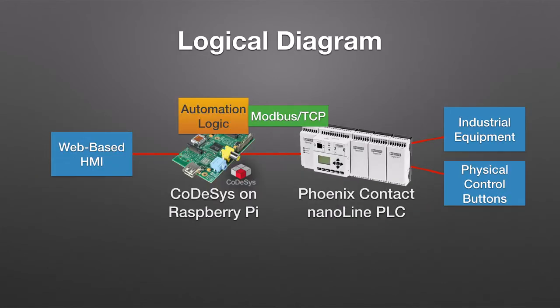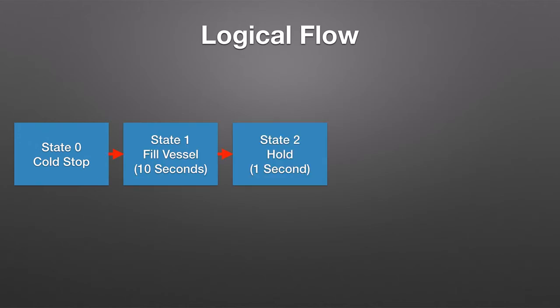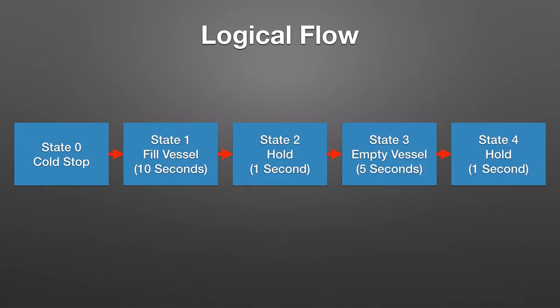This PLC is controlled directly over the network by Modbus commands from the code assist controller, which runs the logic that drives everything. The logical flow configured for this system consists of six states: a cold stop, the filling of the vessel, a short hold, the emptying of the vessel, and another hold.